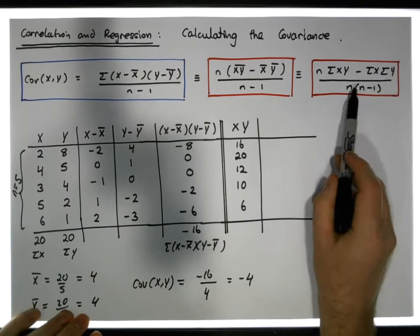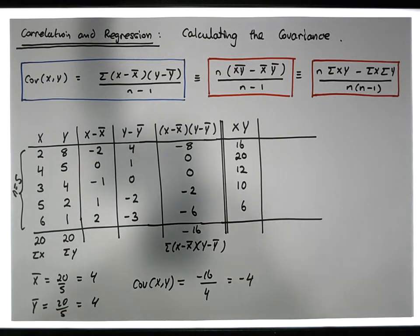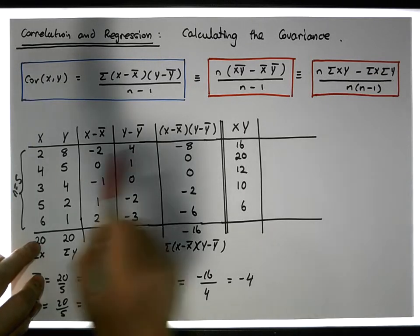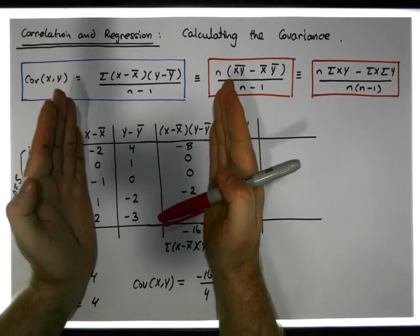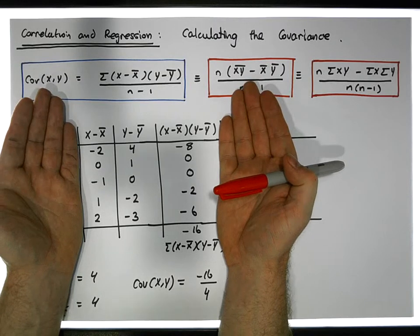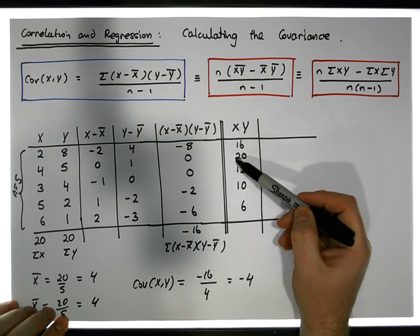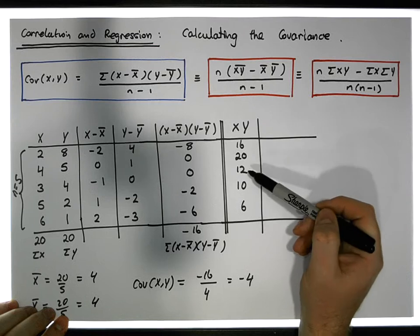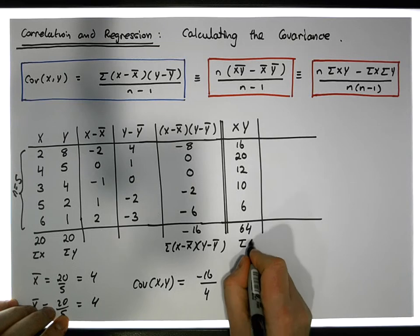To use this particular formula, all we need is the sum of the x column — we have it — the sum of the y column — we have it — and the sum of the x*y column. We don't need those three middle columns, so we've actually reduced our calculations significantly. The sum of the x*y values is: 16 + 20 = 36, + 12 = 48, + 10 = 58, + 6 = 64. So the sum of the x*y's is 64.